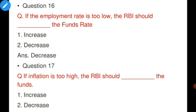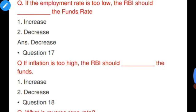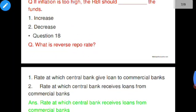Question number seventeen: If inflation is too high, what should the RBI do? It should decrease the money supply. When money supply is decreased but demand remains the same, the interest rate will increase, discouraging investors from borrowing and investing, which curtails inflation.